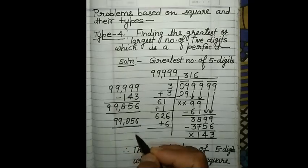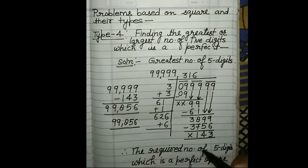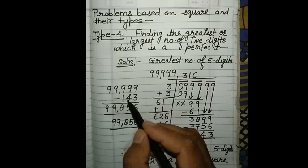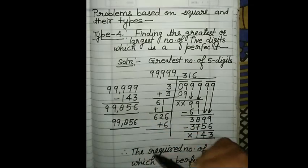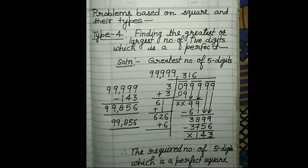Remember this important point: when we have to find the greatest number, we keep the remainder positive and subtract it from the greatest number. But in the case of the least number, you have to remember to treat it as negative and add. So you need to understand both the least number and greatest number rules, along with the long division method for finding square roots.